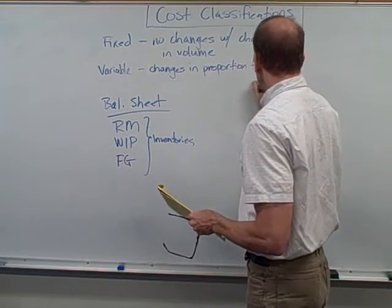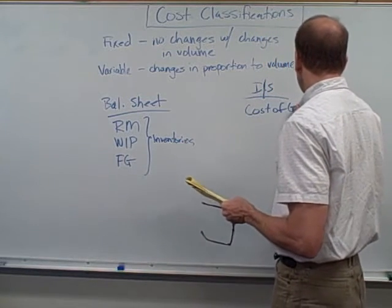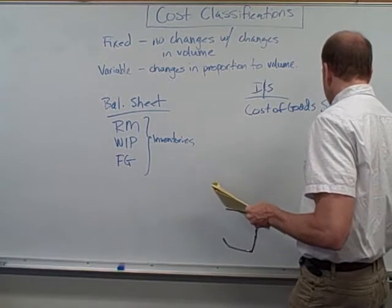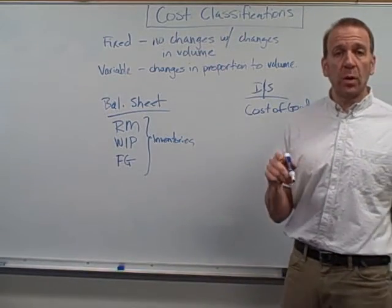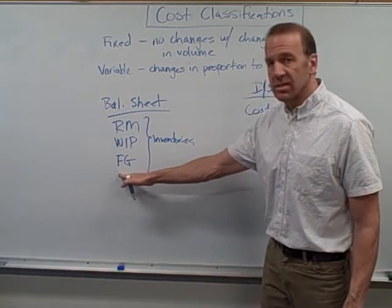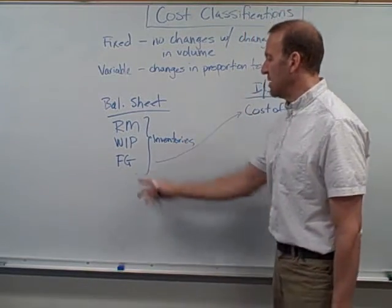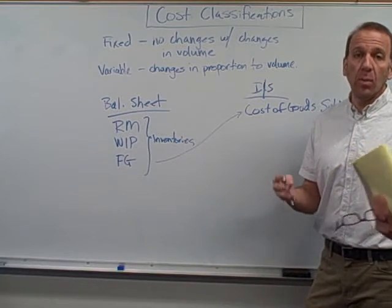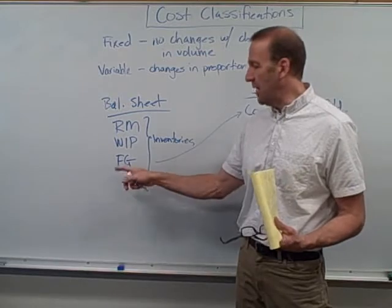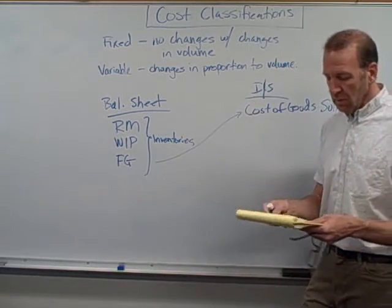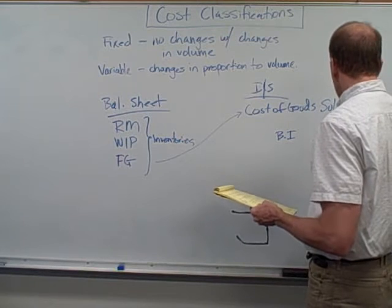On our income statement we have cost of goods sold (COGS). When we sell our inventory item, it comes out of finished goods — we reduce finished goods and then recognize our expense. That's where we calculate our profit depending on what we sold it for. If we sold the table for $200 and it was in our inventory at $150, then we'd have a profit of $50 — we'd take the $150 out of inventory and expense that.